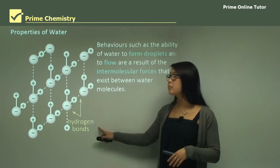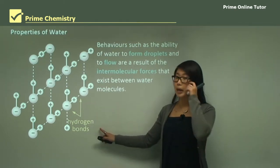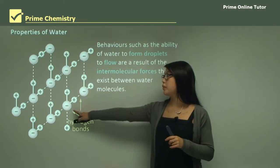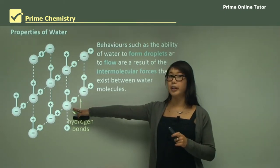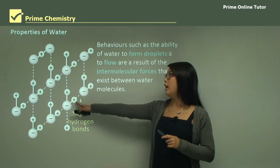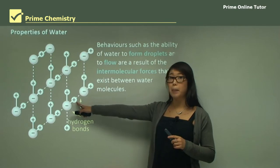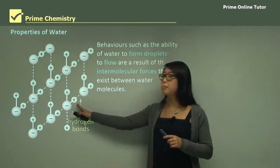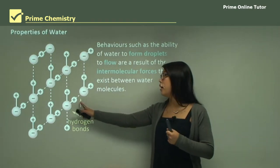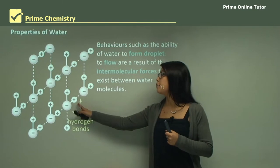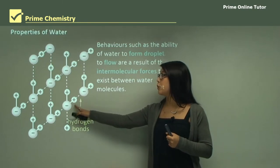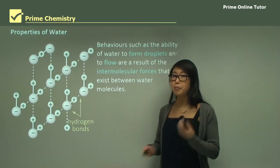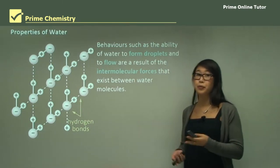Between molecules of water we have mostly hydrogen bonds, because of the electronegative oxygen bound to a slightly positive hydrogen atom, and therefore we're going to have a slight charge and get polarity on the molecule.